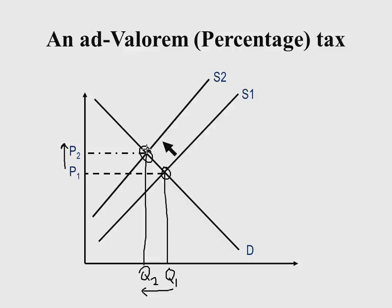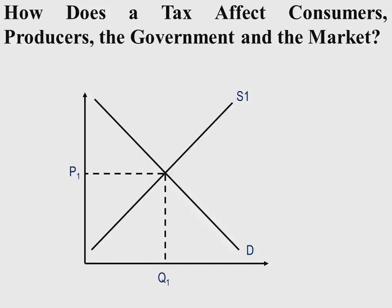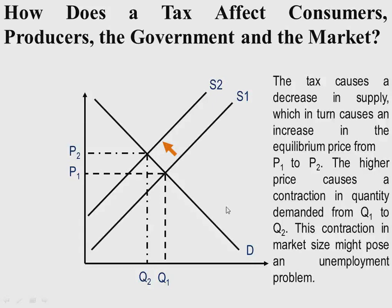Let's take a deeper understanding by looking at how a tax affects consumers, producers, the government, and finally the market. With the initial demand curve D1 and supply curve S1 in equilibrium at price P1 and quantity Q1, if the government imposes a tax on commodity X, the supply curve shifts up and to the left. Price goes up from P1 to P2, and equilibrium quantity reduces from Q1 to Q2. The tax causes a decrease in supply, which in turn causes an increase in equilibrium price from P1 to P2.